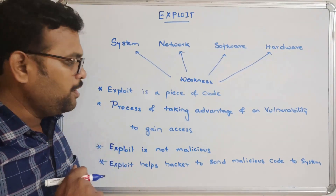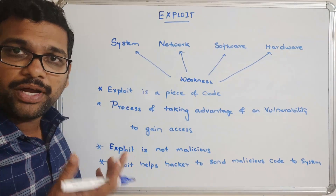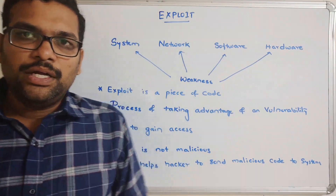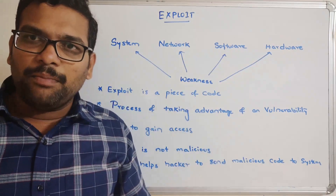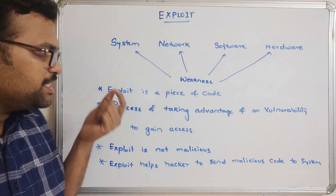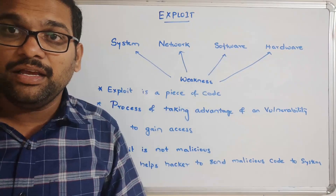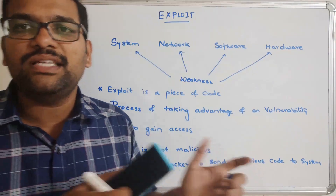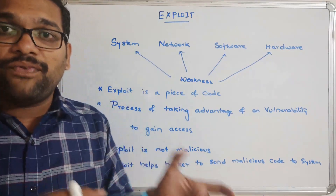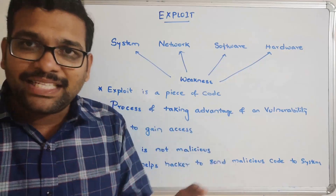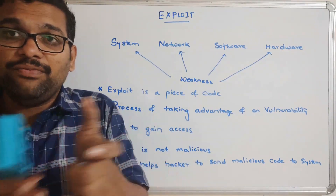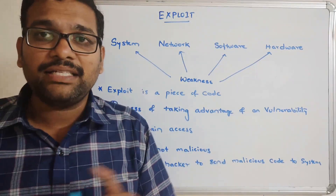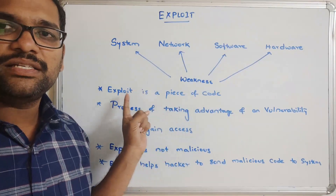How can exploit be taken as positive and how can it be taken as negative? Coming to the positive — if any hacker exploits, meaning if a hacker takes advantage of vulnerabilities, automatically software companies and organizations will provide some patches to cover those vulnerabilities. So in a positive way, in order to find vulnerabilities and develop patches, we can use these exploits. Whether there are any weaknesses and whether a hacker can gain access of the system — that can be identified by using this exploit.